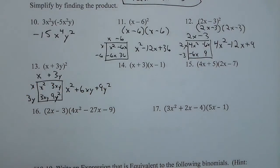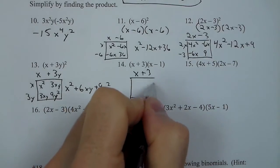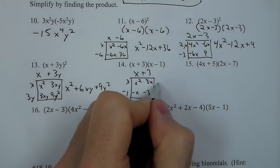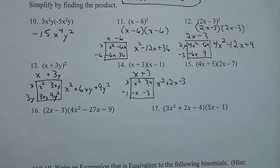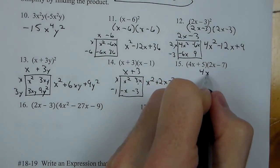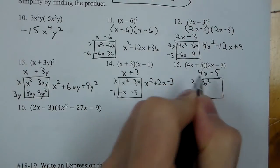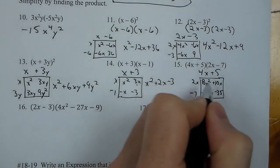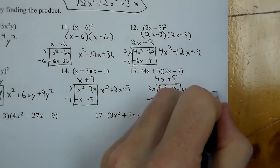So problem 13 gives x squared plus 6xy plus 9y squared. Problem 14: x plus 3 times x minus 1. We get x squared, 3x, negative x, and negative 3 — that becomes x squared plus 2x minus 3. Number 15: 4x plus 5 and 2x minus 7. This becomes 8x squared plus 10x, then negative 28x and negative 35. Combining: 8x squared minus 18x minus 35.